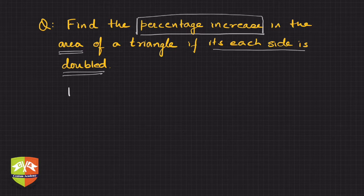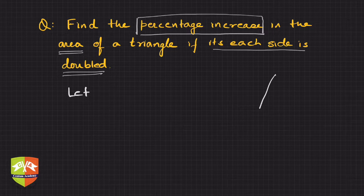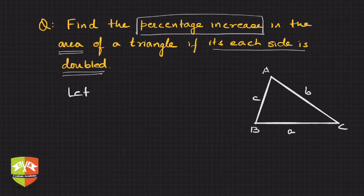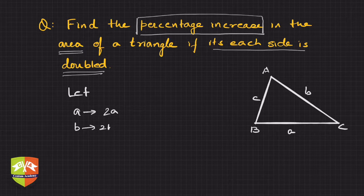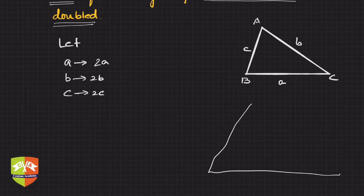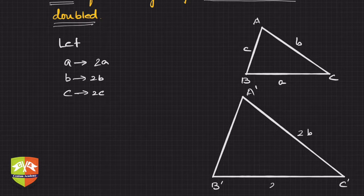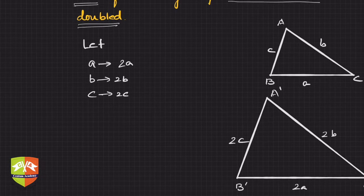Now let's solve the problem. Since no specific numbers are given, let's draw a triangle ABC and name the sides a, b, and c. The sides are doubled, so a becomes 2a, b becomes 2b, and c becomes 2c. Let me draw a new larger triangle A'B'C' with sides 2a, 2b, and 2c.